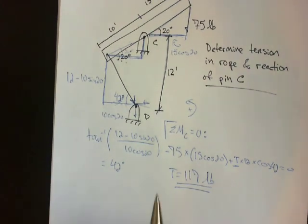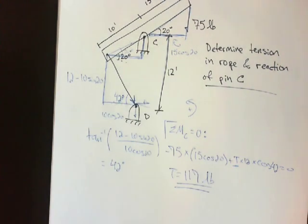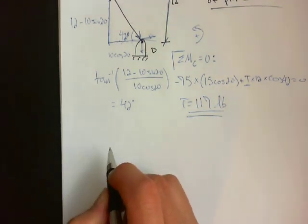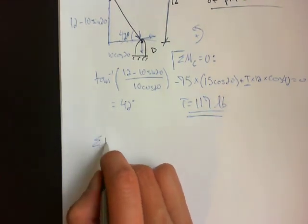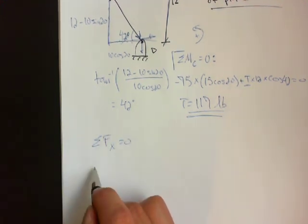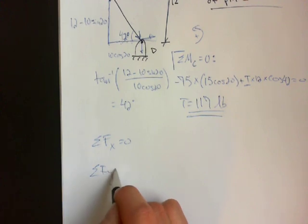And so the next step is to find the reactions at C. So to do this, you sum the forces in the X equal to 0, and you sum the forces in the Y equal to 0.